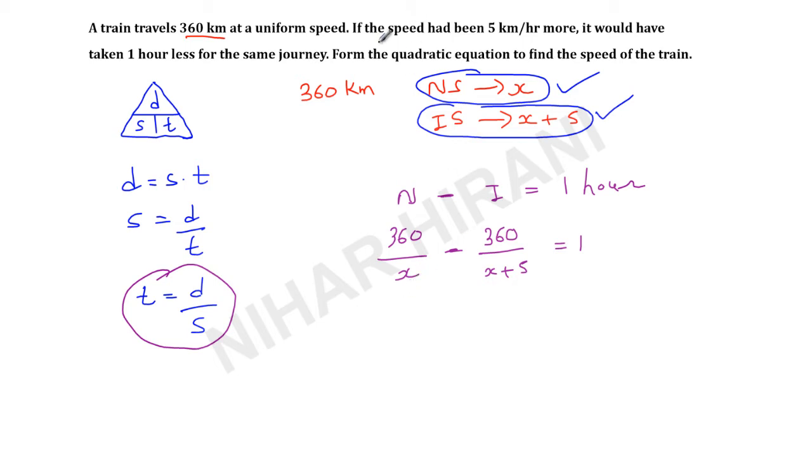Now I will further simplify this. I am taking LCM and this 360 will be multiplied by X plus 5 minus this 360 will be multiplied by X. So 360X equals—this one will be multiplied by both because here it has 1 in the denominator, so it will be multiplied by both X and X plus 5. I wrote this one just to make you understand; even if you don't write this, that's okay because it will give the same answer in multiplication.